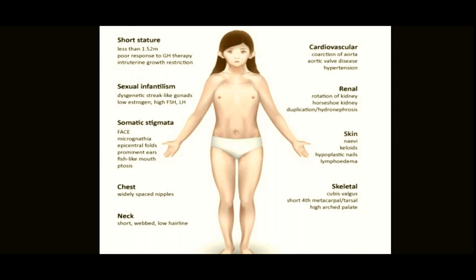A Turner syndrome girl will have short stature, streak ovaries, low estrogen, and high LH and FSH. Facial features include micrognathia, epicanthal folds, and prominent ears. The chest has widely spaced nipples; the neck is short and webbed with a low hairline. Cardiovascular problems include coarctation of the aorta, hypertension, and aortic valve problems — if mosaic Turner patients ovulate and become pregnant, cardiovascular features must be monitored as coarctation carries a high risk of aortic dissection. Renal abnormalities include horseshoe kidney, hydronephrosis, or duplication of kidneys. Other features: hypoplastic nails, lymphedema, cubitus valgus, short fourth metacarpal/tarsal, and high arched palate.